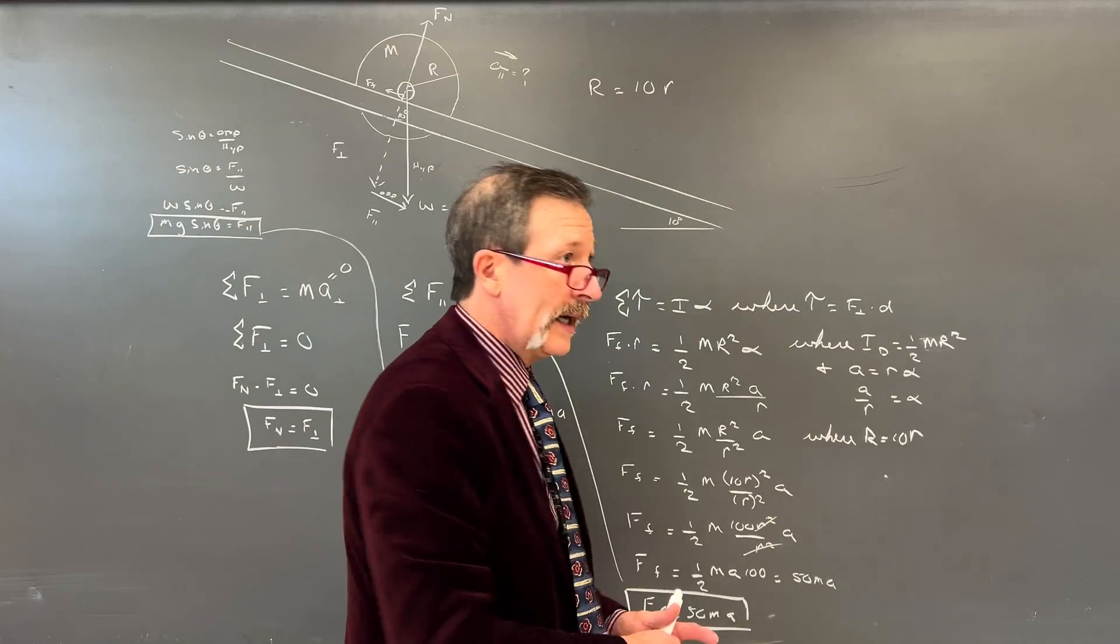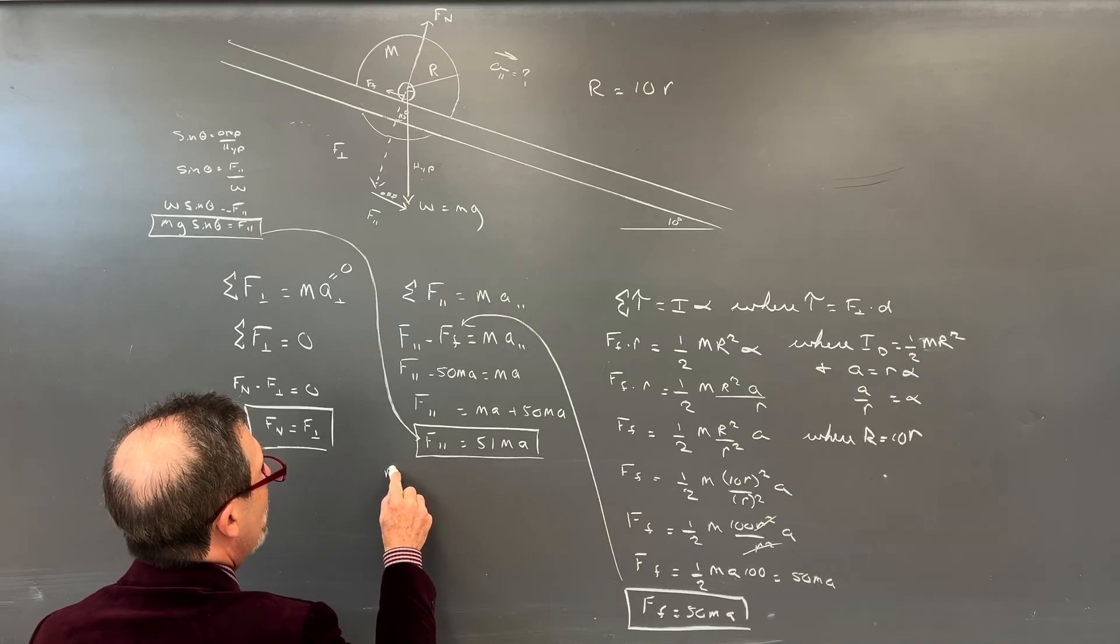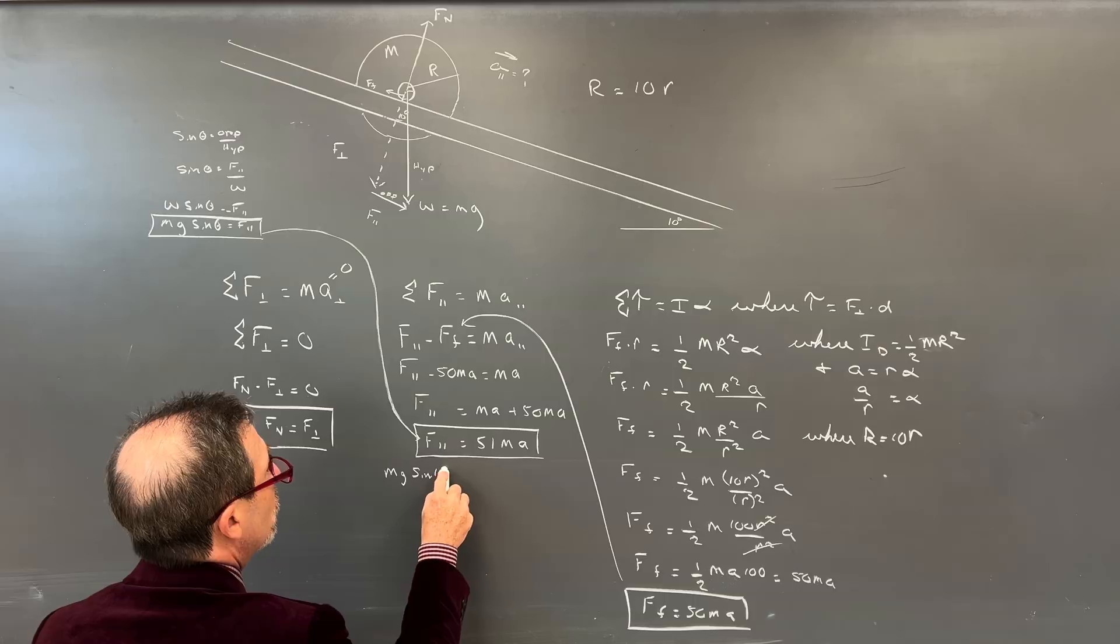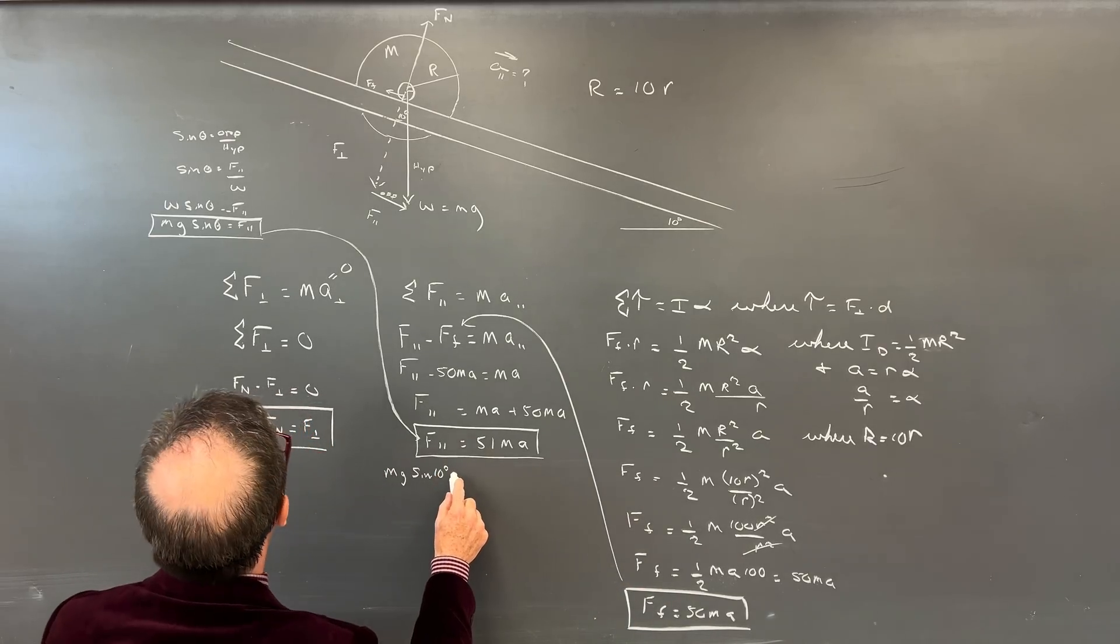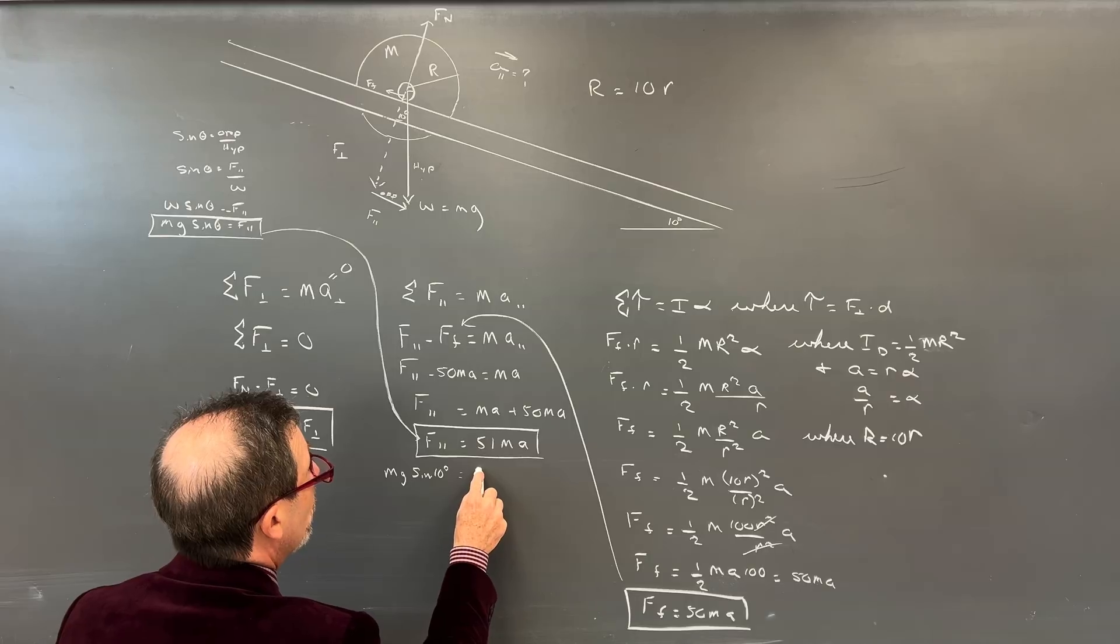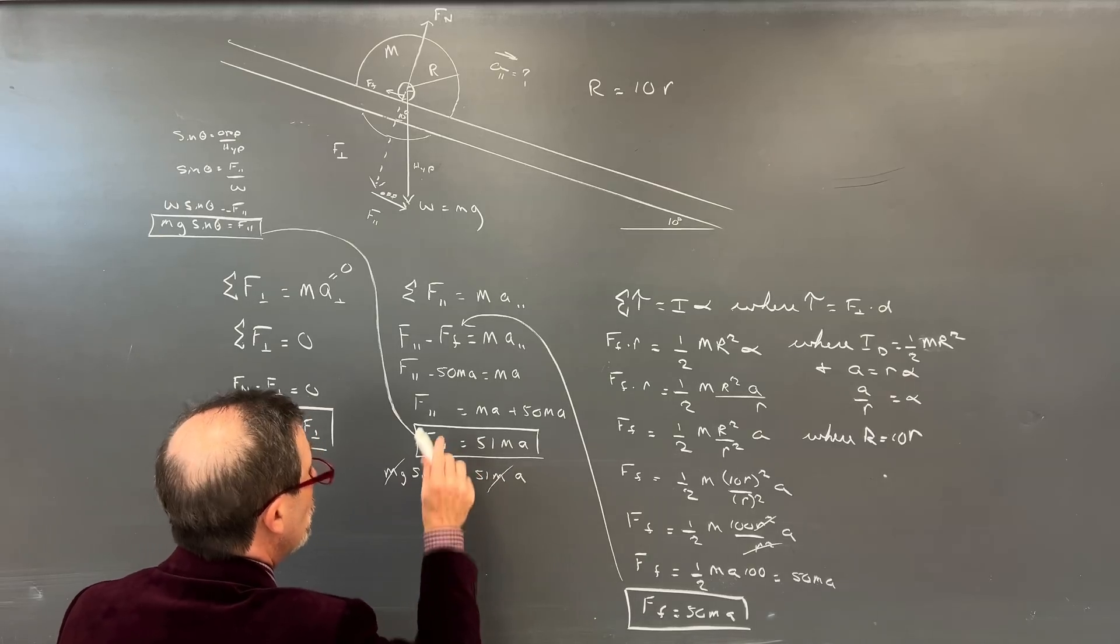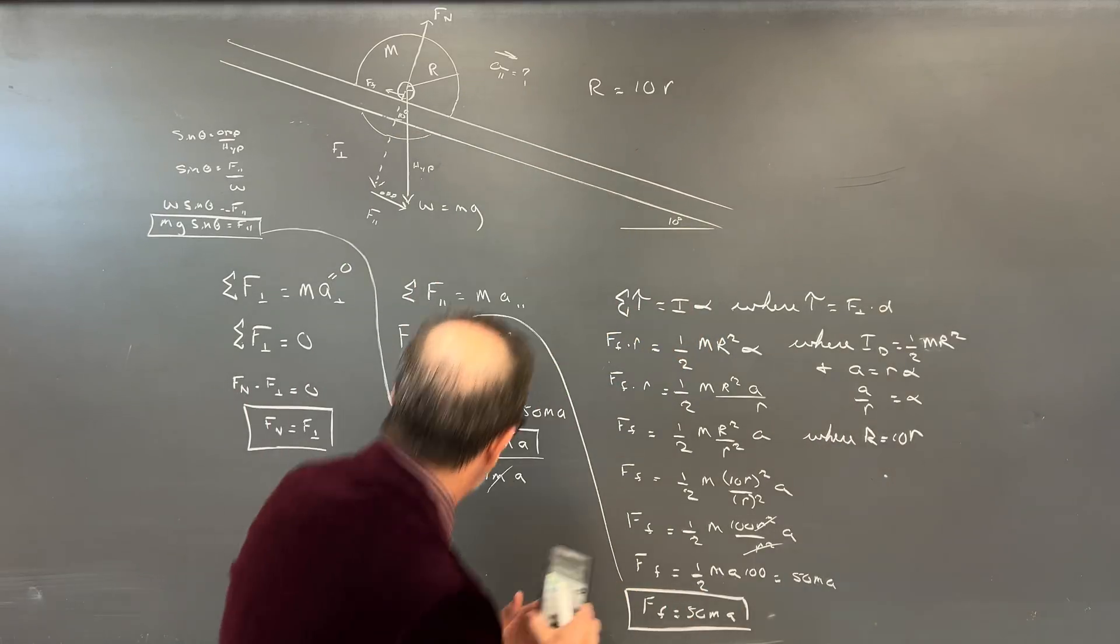Once I have that force of friction, I can take that up to this equation over here. I can bring that right up here. And I could say, well, force parallel minus 50 Ma equals Ma. And these are all parallel. We're only talking about one acceleration there.